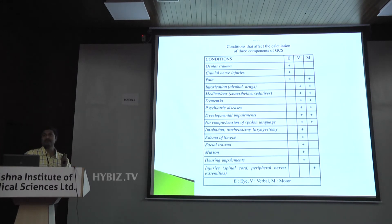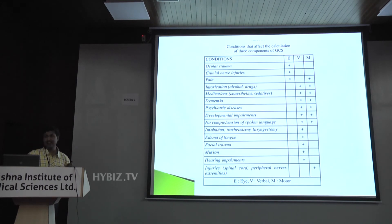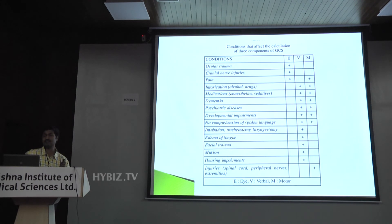One more thing: before assessing the Glasgow Coma Scale, you need to have a proper idea regarding the clinical history of the patient. Suppose the patient has hemiplegia — you'll have to assess the motor response on the opposite side, because the power is zero on the affected side, there is no point in assessing motor response there. Until what age can I apply this Glasgow Coma Scale? Can I apply it on an infant? The age limit is variously stated — somewhere more than 4 or 5 years.